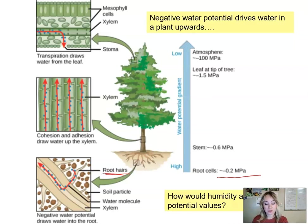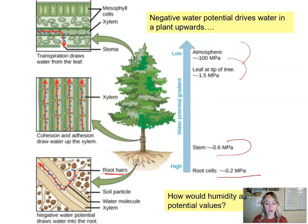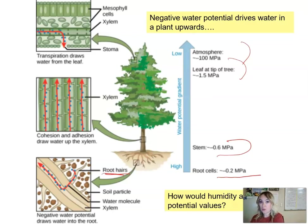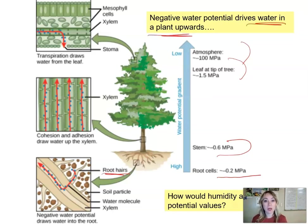Root cells have a water potential of negative 0.2 MPa, and that water potential decreases as we go upwards into the atmosphere. This is how the plant is able to transport water against gravity — because water molecules are cohesive and adhesive, and you have capillary action and transpirational pull at the leaves. Water moves from high water potential in the soil to low water potential in the atmosphere, and this negative water potential gradient drives water upward through the plant.